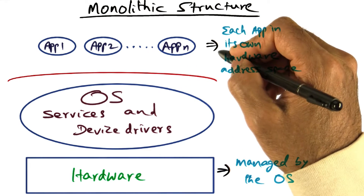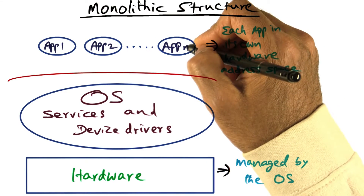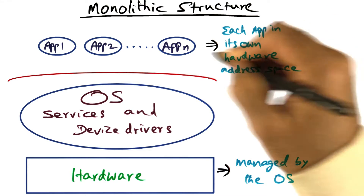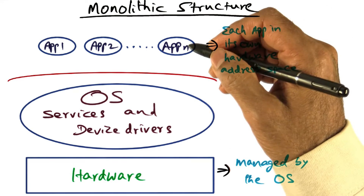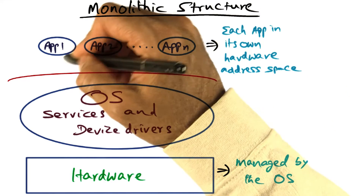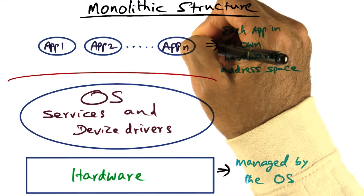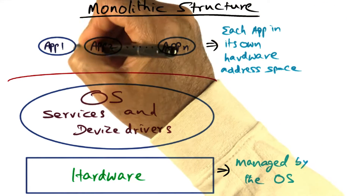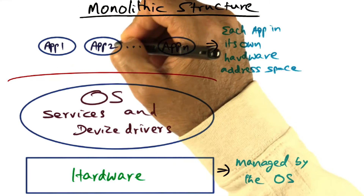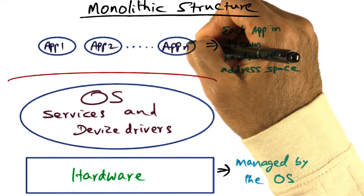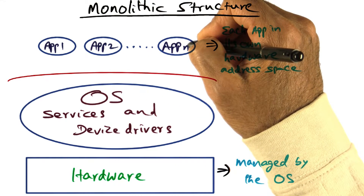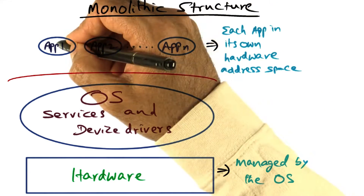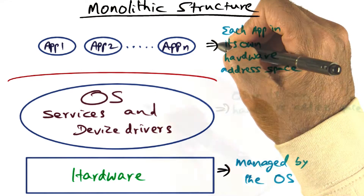And there are applications at the top, and each of these applications is in its own hardware address space. What that means is that every application is protected from one another, because the hardware ensures that the address space occupied by one application is different from the other applications — and that is the first level of protection you get between the applications themselves.